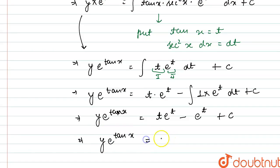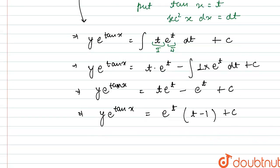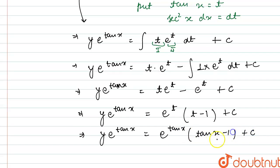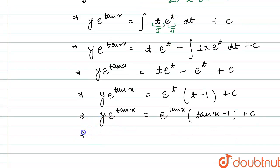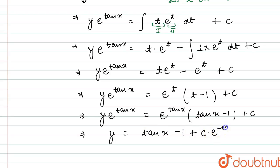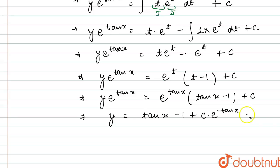Factoring out e^t, we get y · e^(tan x) = e^t (t − 1) + C. Now substituting back t = tan x: y · e^(tan x) = e^(tan x) · (tan x − 1) + C. Dividing the entire equation by e^(tan x), the required solution is: y = (tan x − 1) + C · e^(−tan x).